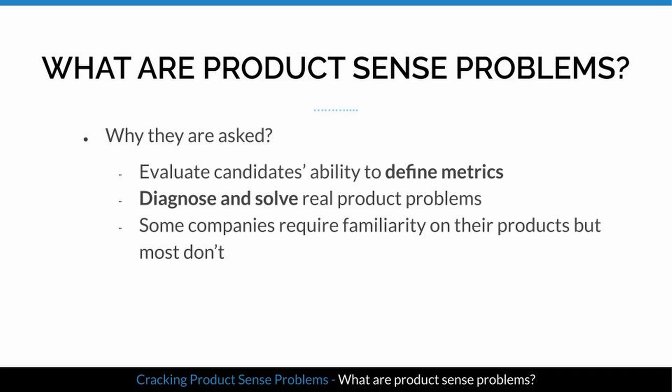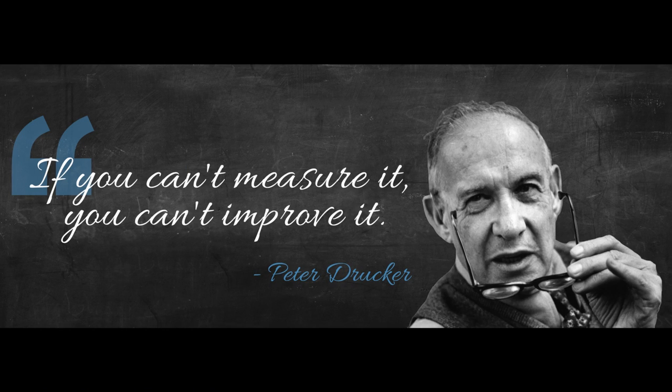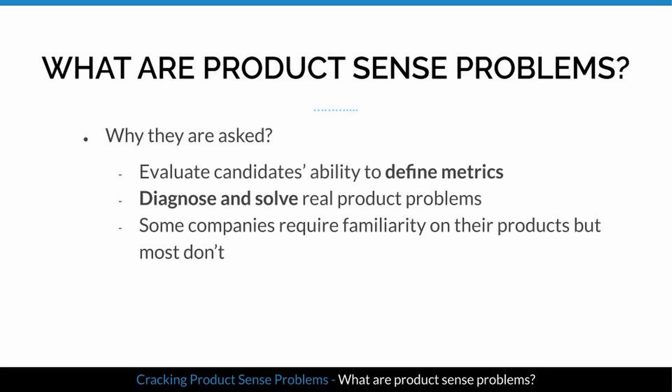First and foremost, what are product science problems? They are product-related questions asked during data science interviews. They test whether a candidate can pick the right metrics to measure the success of a product or feature, and whether they can diagnose and solve real product problems. Some companies like Facebook, Twitter, and Lyft also care about whether a candidate is familiar with their products.